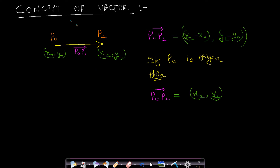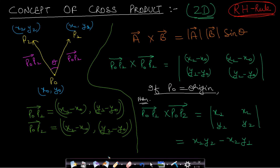Let us look at the concept of vectors. If you are given two points P0 and P1 then we can draw a vector P0 to P1, called the P0-P1 vector. Vector P0-P1 will be nothing but P1 minus P0, which equals (x1 minus x0, y1 minus y0). If P0 is the origin, then x0 and y0 are zero, and vector P0-P1 becomes just the coordinates of P1, which is (x1, y1).